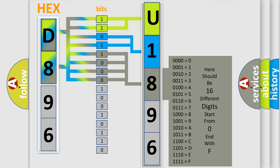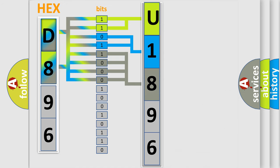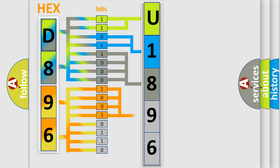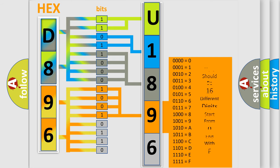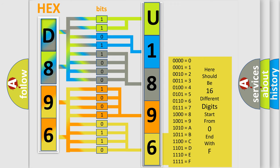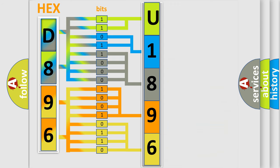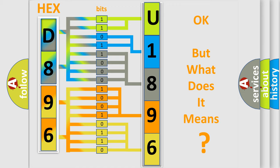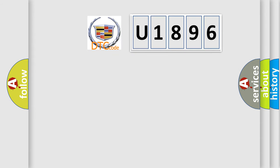The second byte is composed of a combination of eight bits. The first four bits determine the fourth character of the code, and the combination of the last four bits defines the fifth character. A single byte conceals 256 possible combinations. We now know how the diagnostic tool translates the received information into a more comprehensible format.